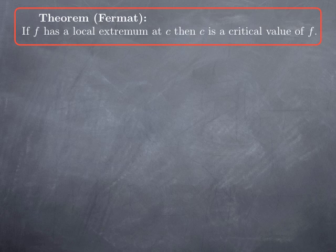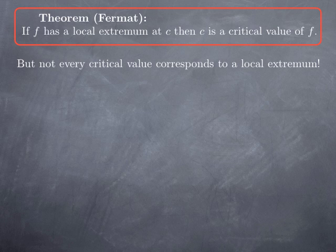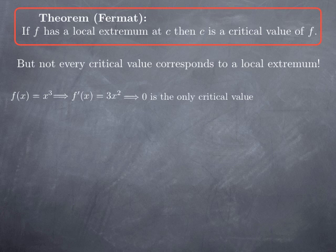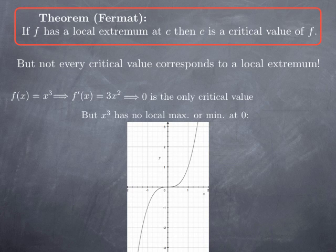So that gives us a way to find local extrema — we know where they could potentially occur. But something to keep in mind is that not every critical value corresponds to a local extremum. For instance, consider the function x³. The derivative is 3x², and therefore its only critical value is 0. But if you look at the graph of x³, there is no local maximum or local minimum at 0. In other words, the converse of the theorem is not true.